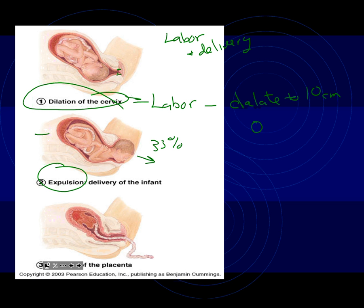The last stage of delivery is the delivery of the placenta. Contractions do not stop until the placenta is delivered. The umbilical cord has been cut, but the placenta is still inside and has to be removed because it's the baby's. The placenta is the baby's creation and it's foreign to the mom, so it must be removed. Those are the stages of labor and delivery.